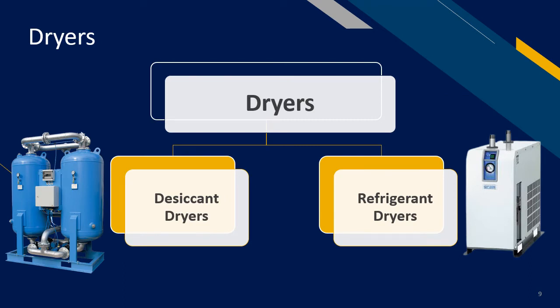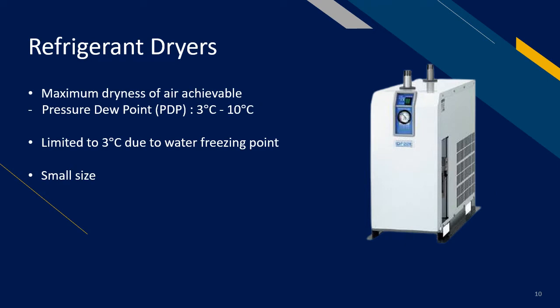Now we move on to dryers. Water from compressed air must be removed before piping it to the production site. Dryers can be classified into two types: desiccant dryers and refrigerant dryers. Refrigerant dryers work similarly to an air-conditioned system — air enters the dryer and Freon gas is used to cool down the air, which subsequently removes water content. The dryness achievable is from 3 degrees Celsius to 10 degrees Celsius pressure dew point.